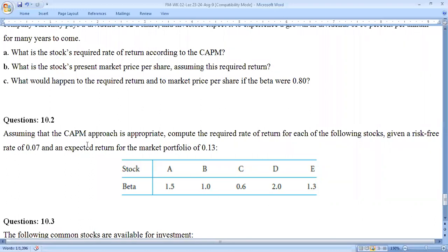For Question 10.2, you need to use the Capital Asset Pricing Model approach. You apply the risk-free rate of 7% and expected return of 30% on the market portfolio. Companies A, B, C, D, E are different, and you need to calculate their expected returns using the simple formula that we have done.